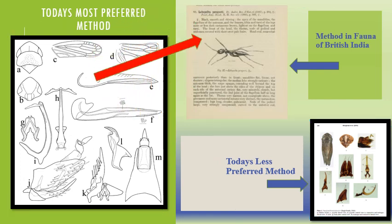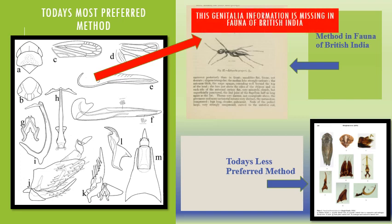Now if we look at the modern system of taxonomy, it lacks in the Fauna of British India — we cannot find genital images there. So if we want to see the genitalia of any specimen, we will have to borrow the specimen or visit the Natural History Museum, dissect the specimen, and compare it with our specimens to confirm identification.